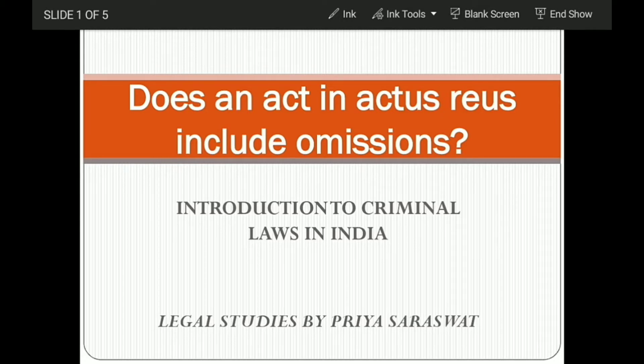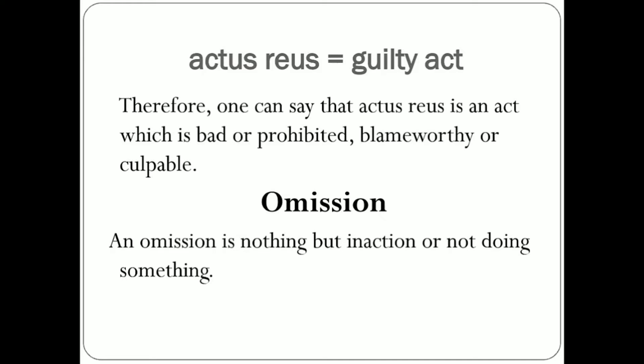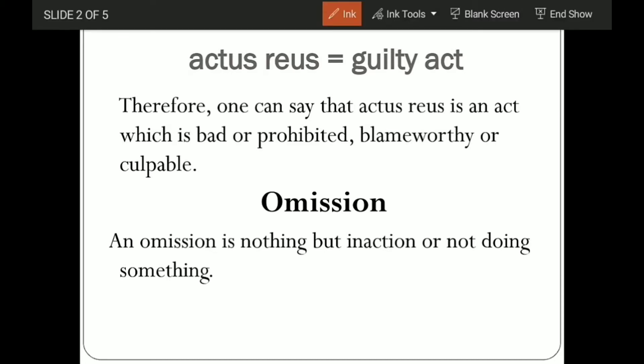When we talk about actus reus — if you have studied criminal law even at the introductory level, even the definition of crime — you must know what actus reus is. Actus reus is a guilty act: something which is prohibited, not allowed — an act or action which was not allowed in the first place, which is prohibited, bad in nature, or even punishable and unlawful. So we can say actus reus is an act which is bad, prohibited, blameworthy, or culpable. Now, the second question: what do we mean by omission? An omission is nothing but inaction — not doing something.